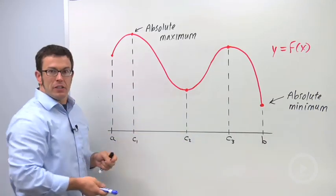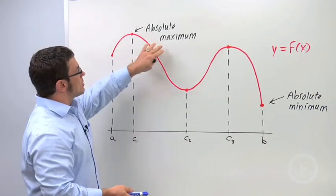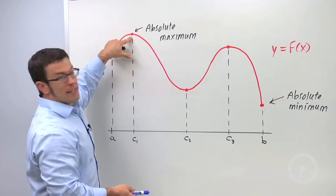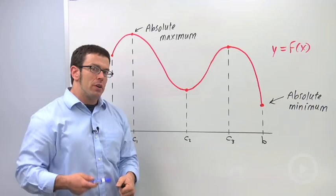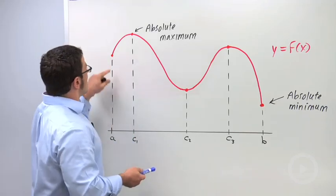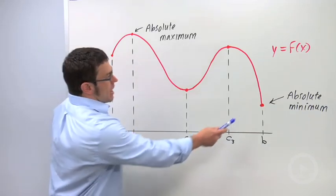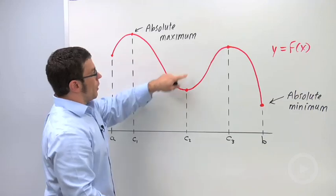All such functions, if they're continuous, are going to achieve an absolute maximum value—that's the highest point on the graph—and an absolute minimum value somewhere. And the key is, where do they achieve these values? They achieve the values either at an endpoint or at a critical point.